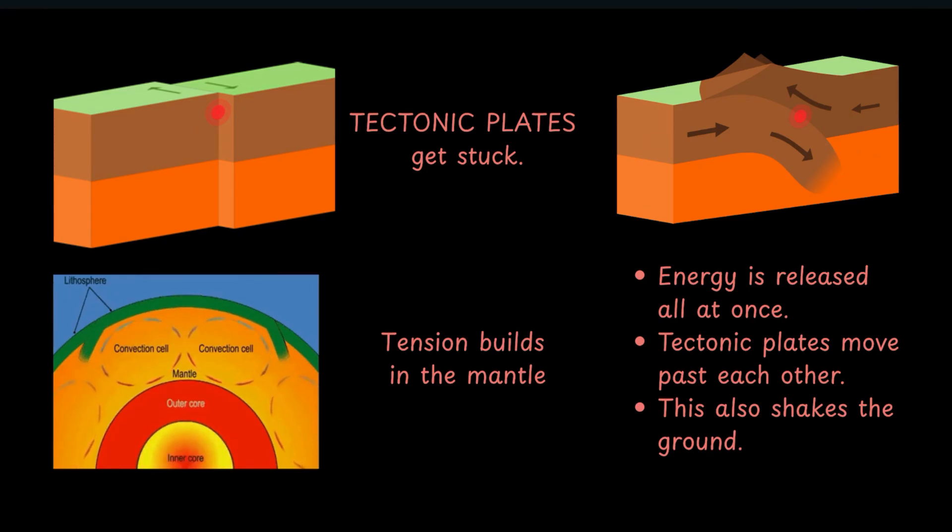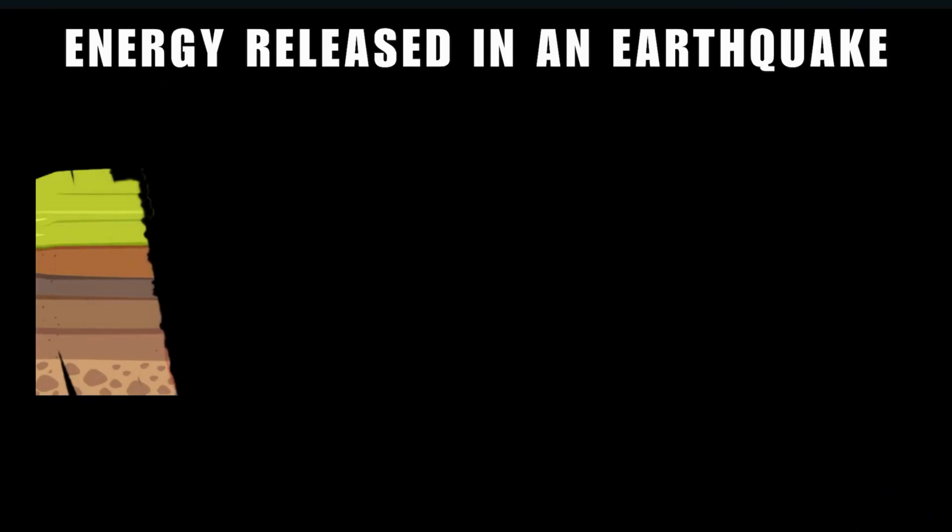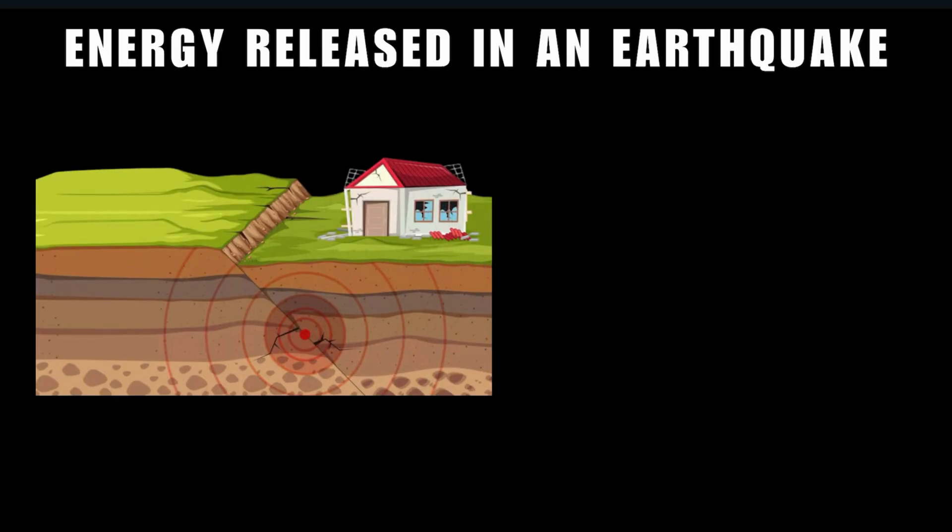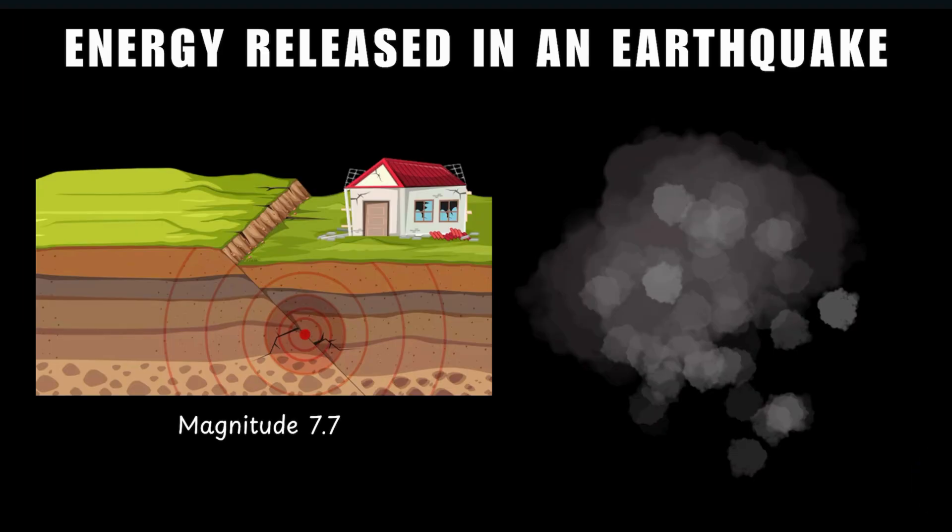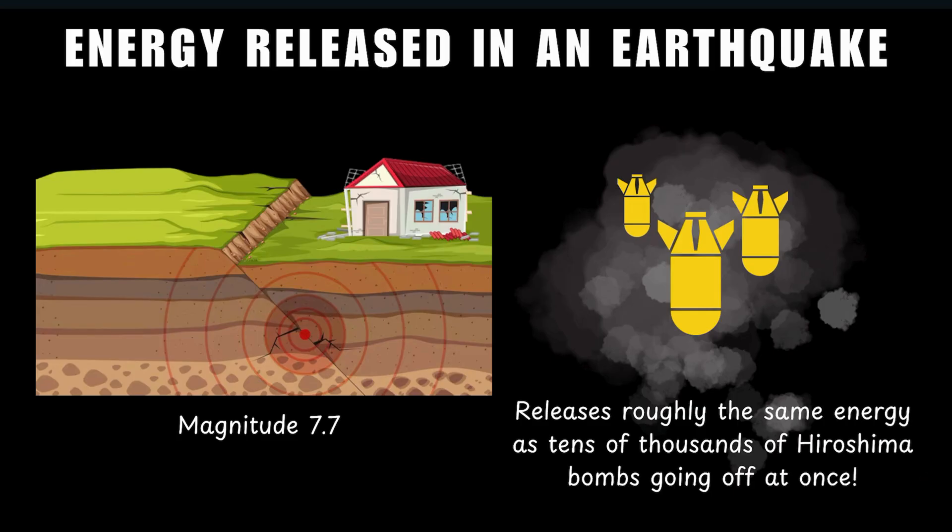And in case you are wondering how much energy is released, let me help you. An earthquake of magnitude 7.7 like the one in Gujarat releases roughly the same amount of energy as tens of thousands of Hiroshima bombs going off all at once.